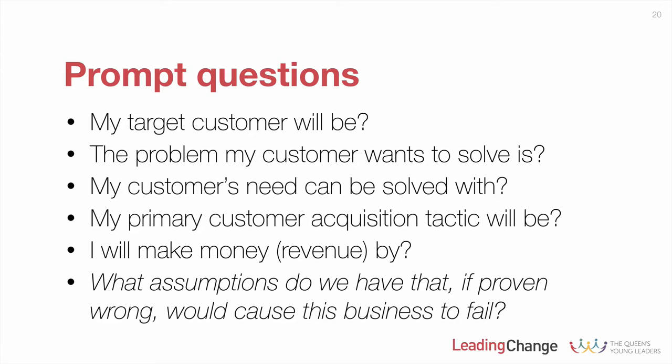Key prompt questions include: my target customer will be — remember the business model canvas centers on your value proposition and customer. The problem my customer wants to solve is — that alludes to the value proposition. My customer's need can be solved with — asking what product or service we're offering. My primary customer acquisition tactic will be — how we'll find and convert customers, which maps to your channel on the canvas. I will make money by — what's your strategy for making cash? And finally, a great catch-all: what assumptions, if proven wrong, would cause this business to fail? This question helps you prioritize which assumptions to start validating first.